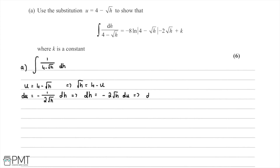So dh = -2(4 - u) du, and expanding the brackets gives dh = (-8 + 2u) du. We will now take this expression and substitute it into our integral, and also substitute the expression for √h.